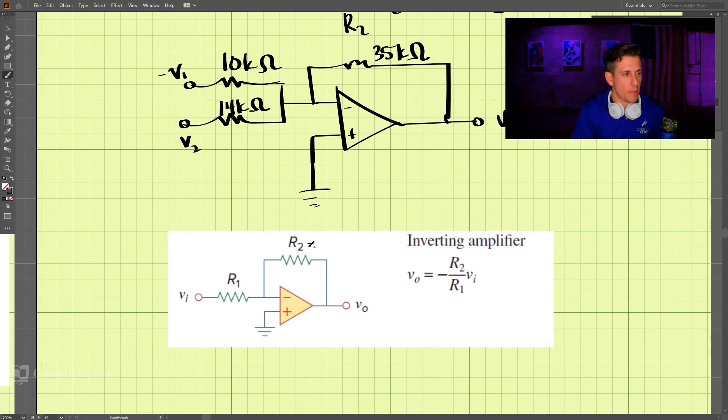So let's just put them at 10 kiloohms. This one is equal to 10 kiloohms. So we have v_out is equal to negative v1, because this ratio is one.